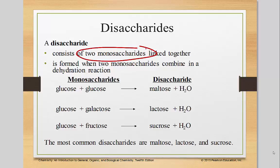Fructose was the only ketone, while galactose and glucose are both aldehydes. The difference between galactose and glucose is on that fourth carbon — those are the things you need to remember. Just like there are three common monosaccharides, there are three common disaccharides that we're going to talk about.